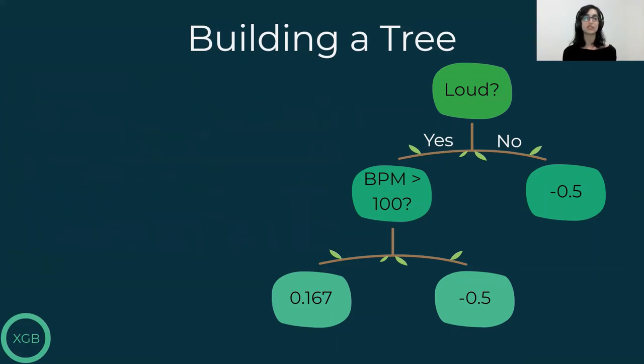Just like we saw in the decision tree, we have a measure that helps us choose the best split. This time, it's trying to minimize the residuals, the difference between the label and the prediction that results from each split.